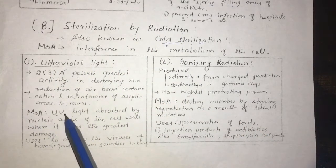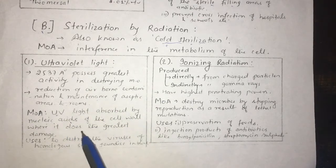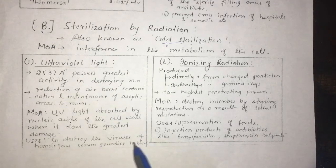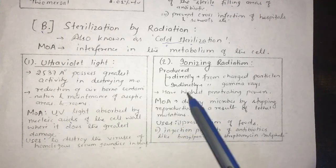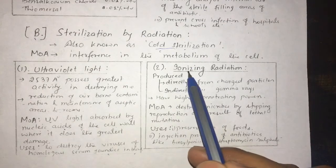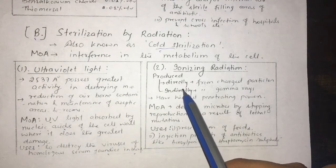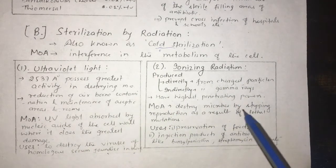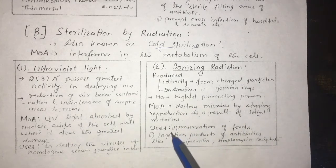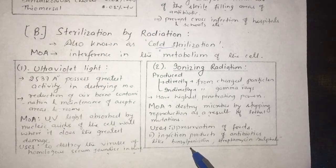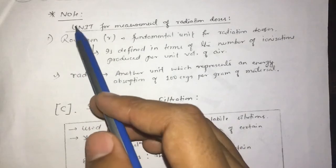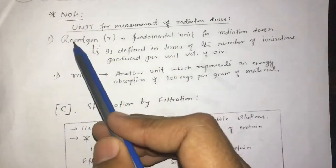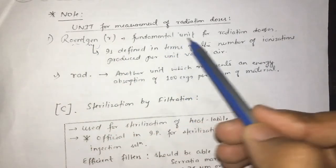The mechanism of action of ultraviolet light: UV light is absorbed by the nucleic acid of the cell, causing the greatest damage. It is used to destroy viruses such as homologous serum jaundice. Ionizing radiation is produced directly from charged particles or indirectly from gamma rays, which have the highest penetrating power. The mechanism of action is destroying microbes by causing lethal mutations. Uses include prevention of food spoilage and sterilization of antibiotic products like ampicillin, penicillin, and streptomycin sulfate.